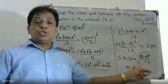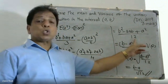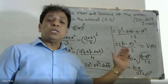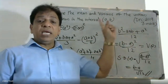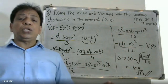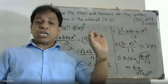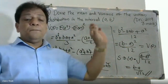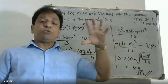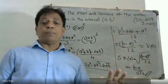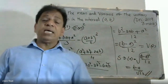Summary: For a uniform distribution, the mean is (a plus b) by 2, and the variance is (b minus a) whole squared by 12. The standard deviation is (b minus a) by root 12. These are derived from expectation of X squared minus expectation of X whole squared.